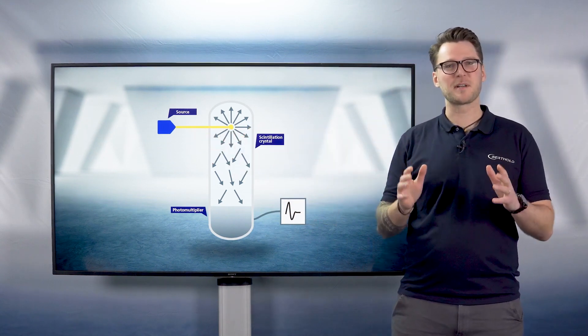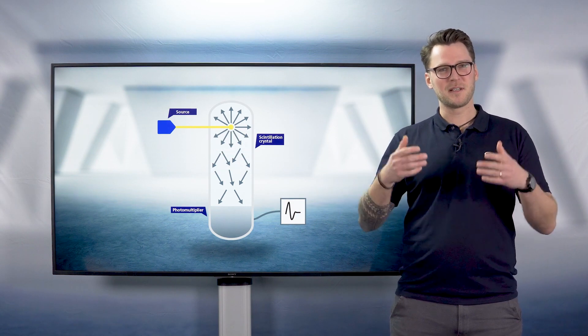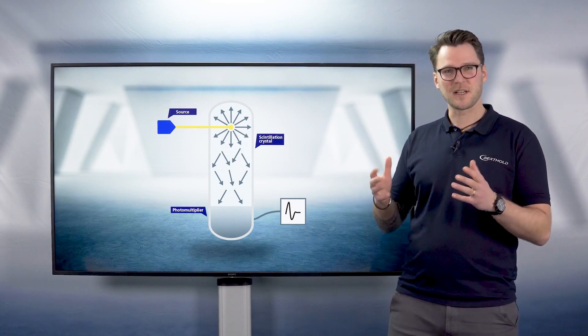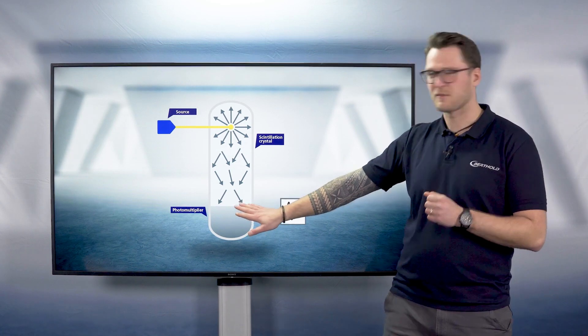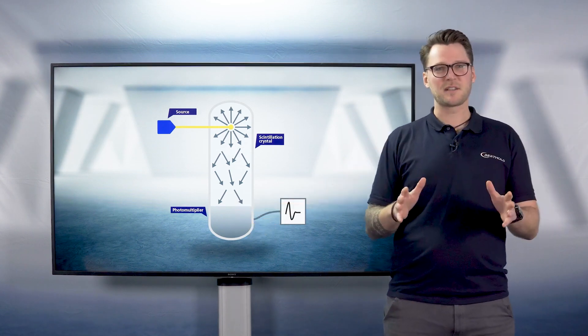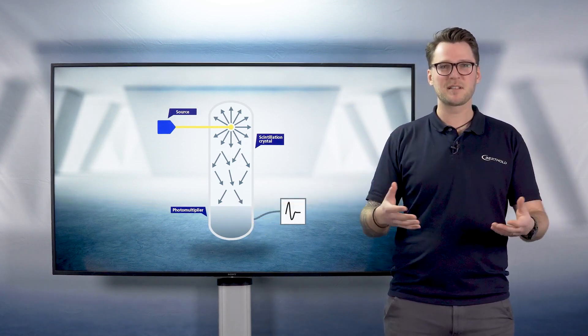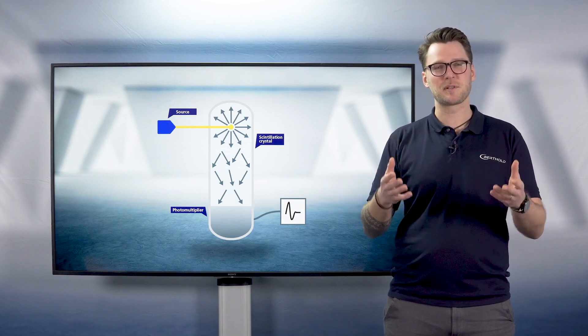light flashes are generated inside the material. These light flashes knock out electrons at a photocathode at the top of the photomultiplier. These electrons are then multiplied and converted into a measurable current.